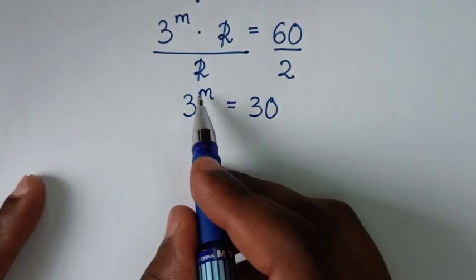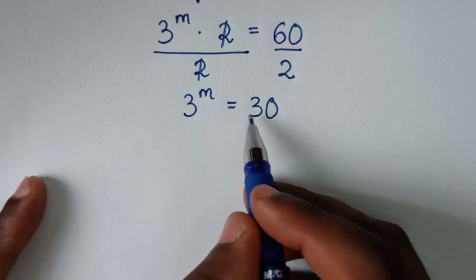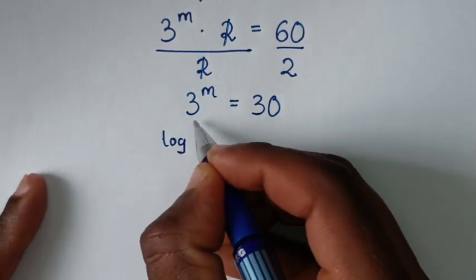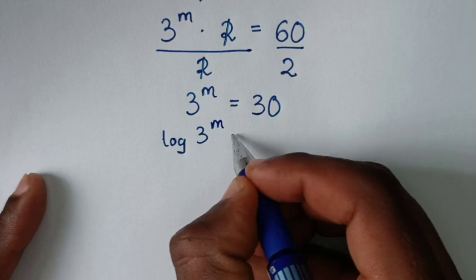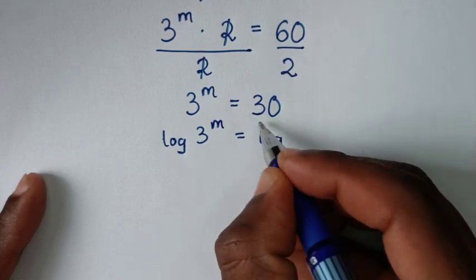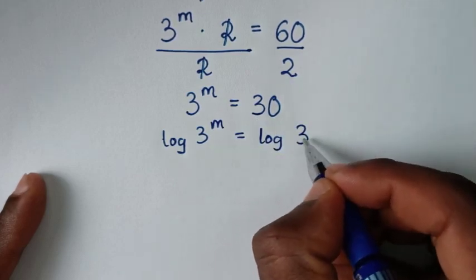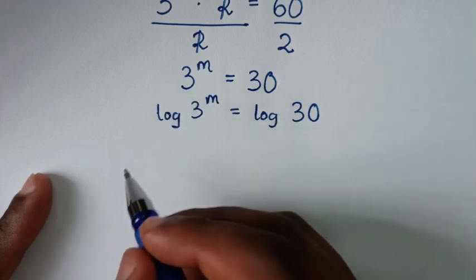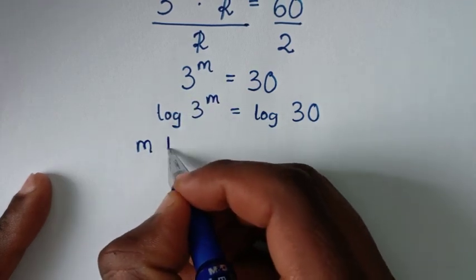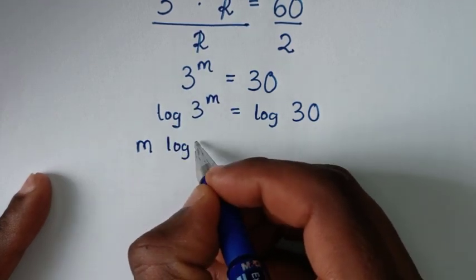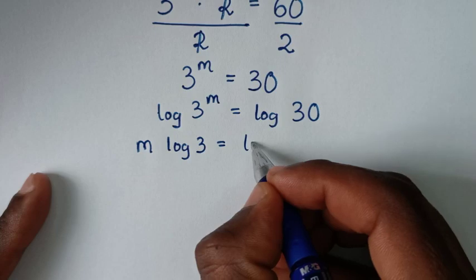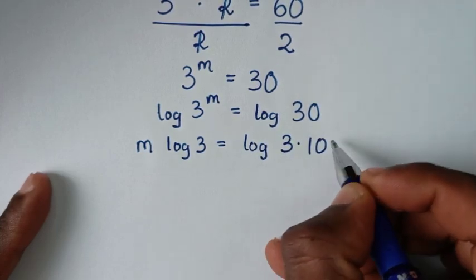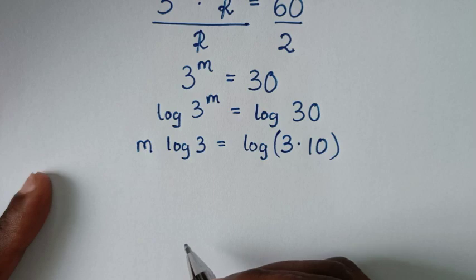To find m, we apply log to both sides. So it becomes log of 3 power of m is equal to log of 30. Then the power m moves to the front, giving us m times log of 3 is equal to log of 30. Now 30 is the same as 3 times 10.